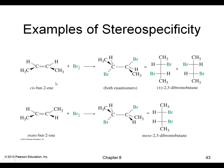Here's another, slightly more complicated example. Adding bromine gives the trans product. Starting with trans-butene instead of cis, the bromines again end up on opposite sides of each other.